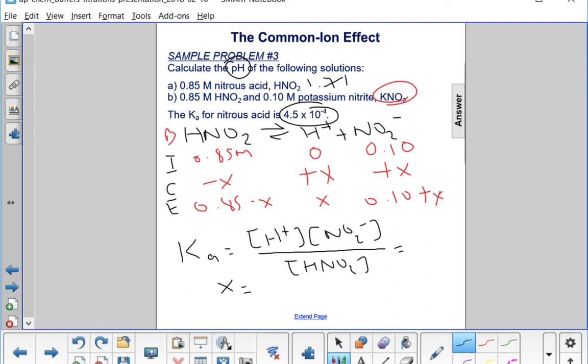Again, let's assume x is very very small compared to the initial concentration, so that we essentially have no change there. And that would leave us with x times 0.1 over 0.85. Solve for x, get 3.83 times 10 to the minus 3.